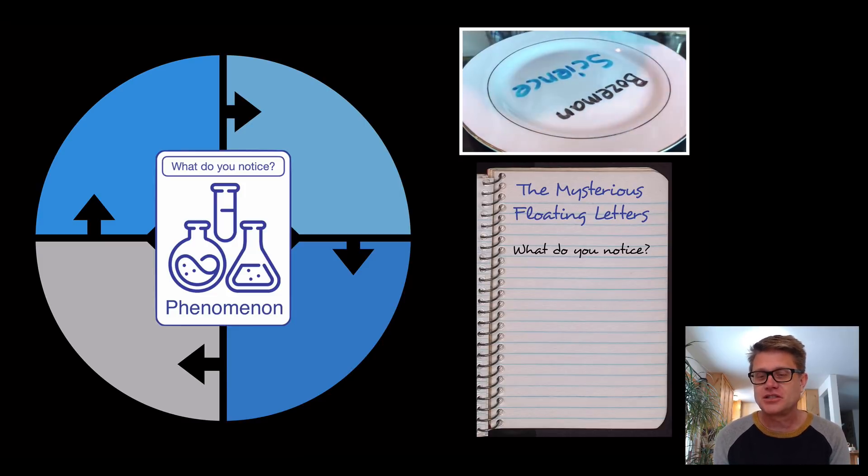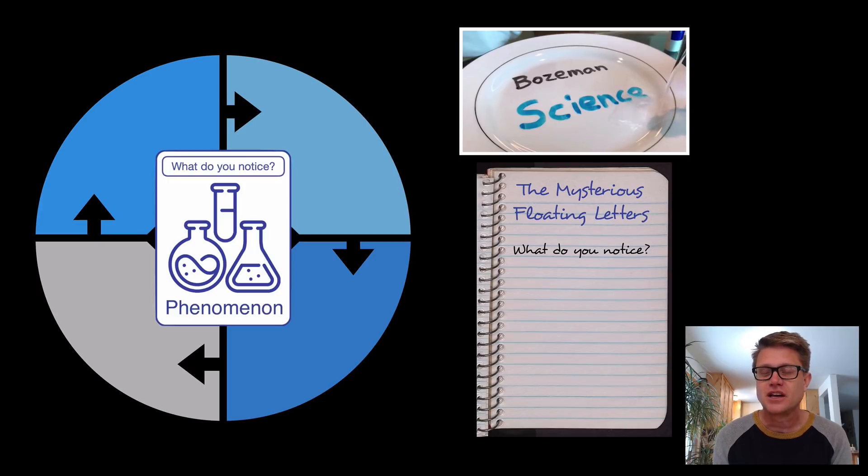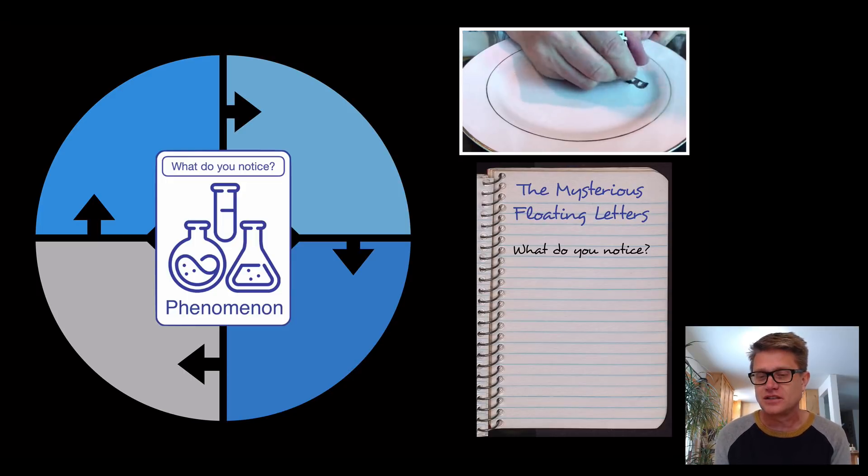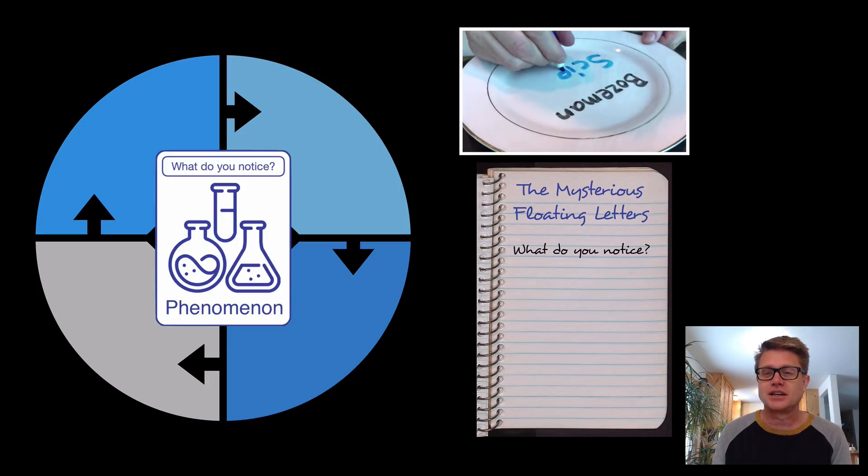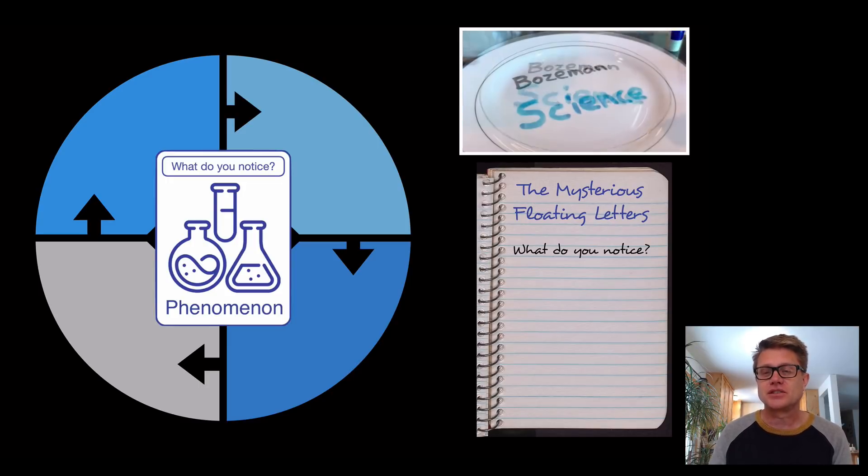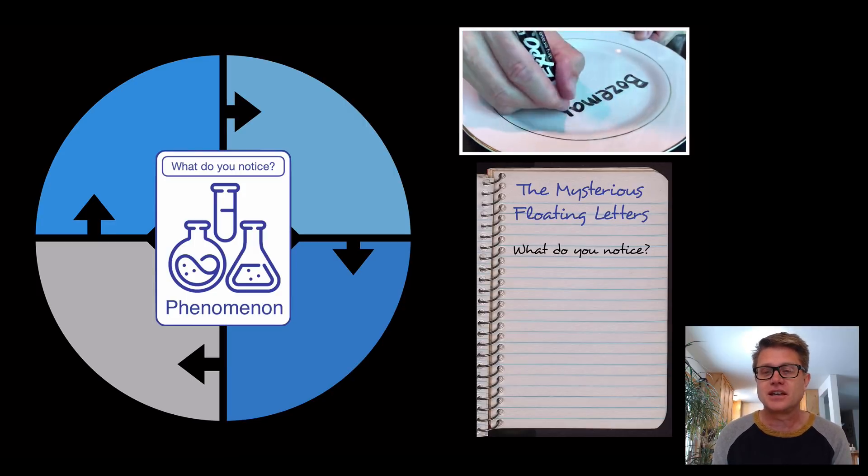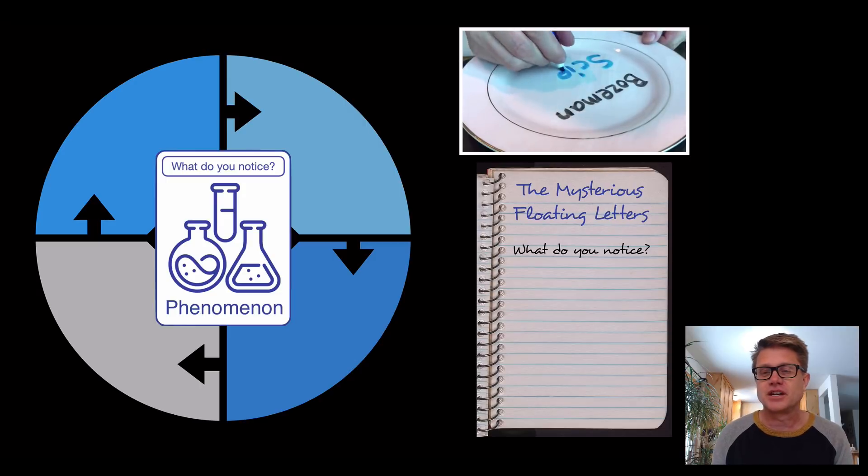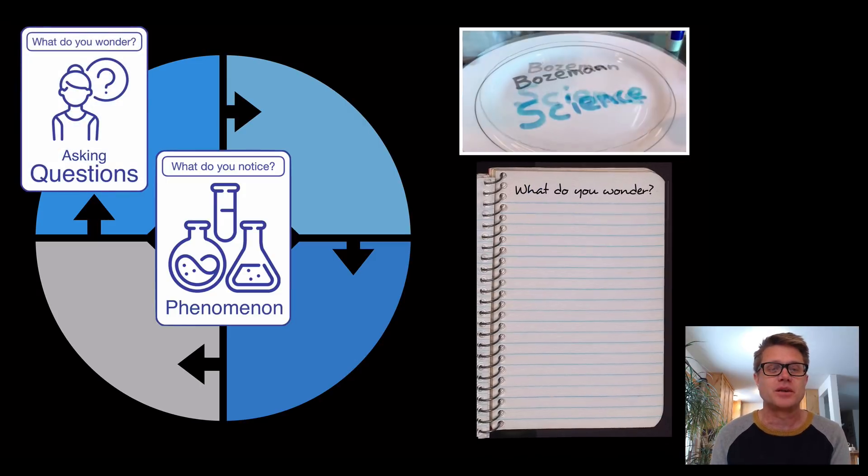We could call this the mysterious floating letters. And what you want them to do is watch the video and then just start writing down what they noticed. Those are called their observations. It will be hard for them to do this at the beginning, but you just give them time and they will start to observe things. And all of a sudden they will start to notice things in the video that you didn't even notice. Now if your kids can't write, then you can scribe some of the questions or just record what they are asking in a video. The key thing is to clearly get your observations out first.